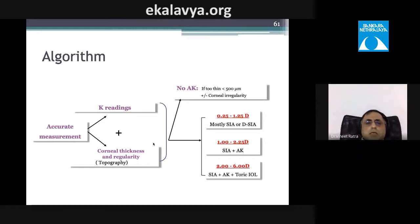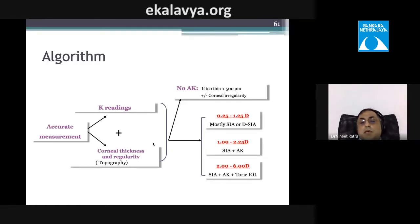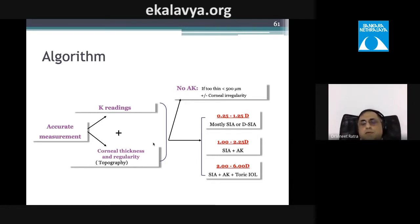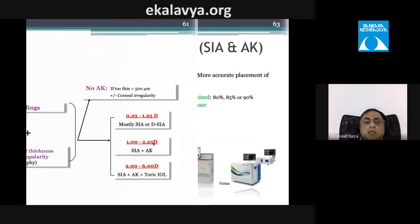The management algorithm: perform K readings and confirm with corneal pachymetry. If cornea is thinner than 500 microns, avoid astigmatic keratotomy. For 0.25–1.5 diopters, use SIA on-axis incision. For approximately 1.0–1.5 diopters, consider astigmatic keratotomy with caution. For more than 1.5 diopters, use a toric IOL.